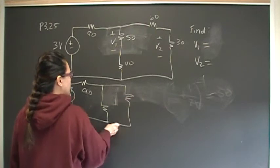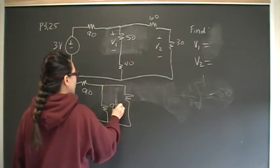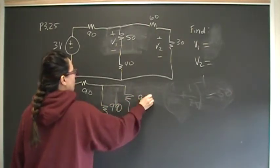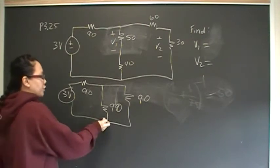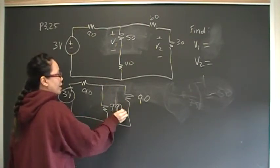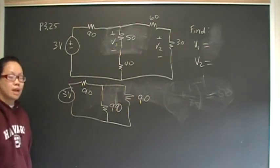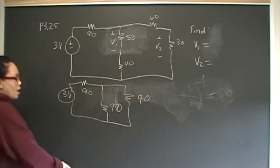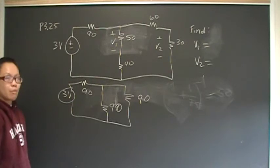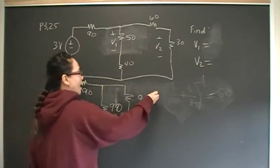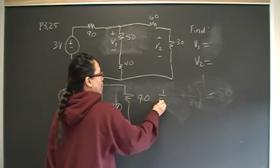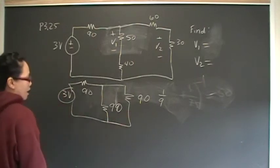The other one is 60 in series with 30, so I have 90 in parallel with 90. When you have two parallel branches that are the same value, exactly the same value, in this case 90 in parallel with 90, that's the same thing as 1 half, right? Do the math yourself.